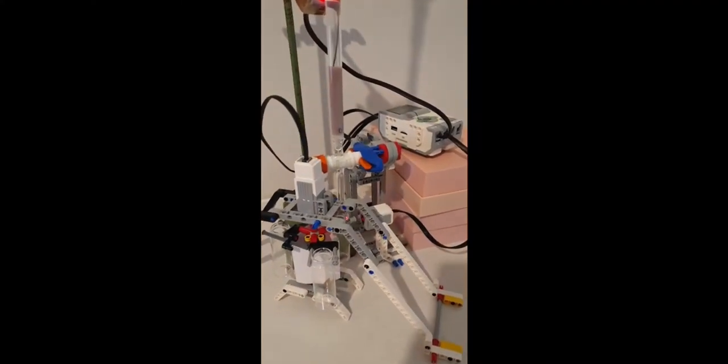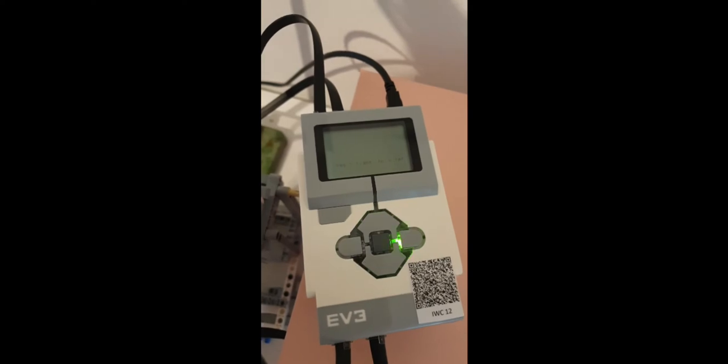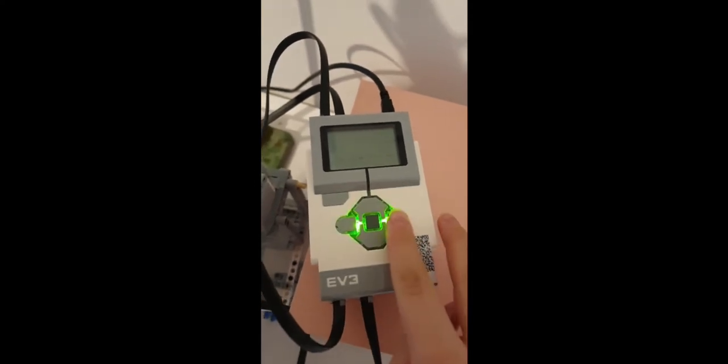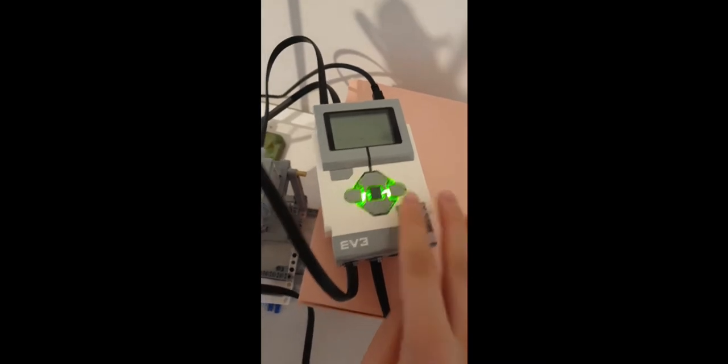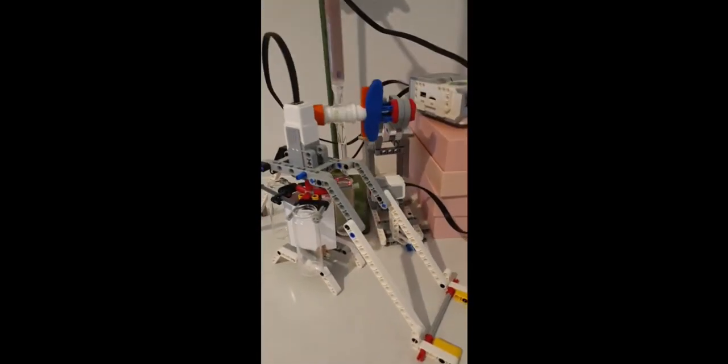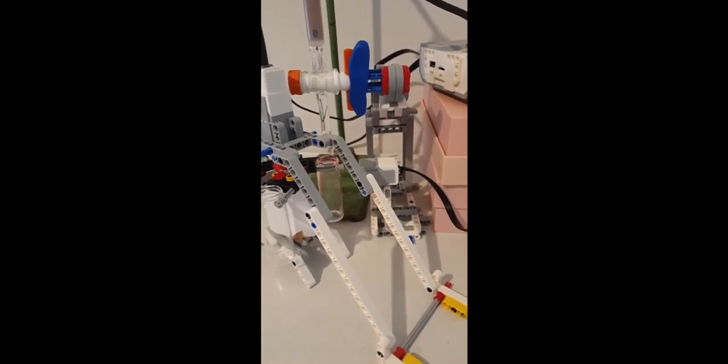The first design that we can see here is a column chromatography robot. Column chromatography is used in synthetic chemistry to clean up your reaction products. Usually you just want one target molecule but you have a lot of byproducts and they can be separated by their retention times in the column.